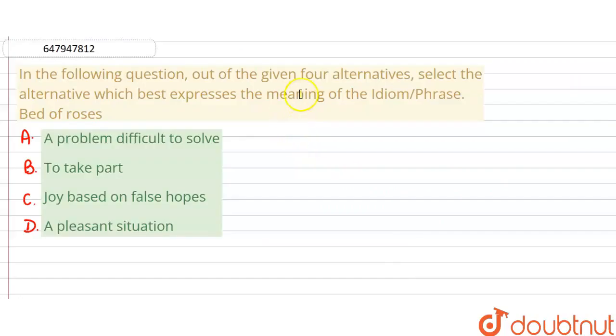Hello everyone! The question is we have been given four alternatives and out of which we need to select the one which can best express the meaning of the given idiom or phrase. We have an idiom that is bed of roses. What does the meaning of bed of roses mean and which correct option can be? Let's see.